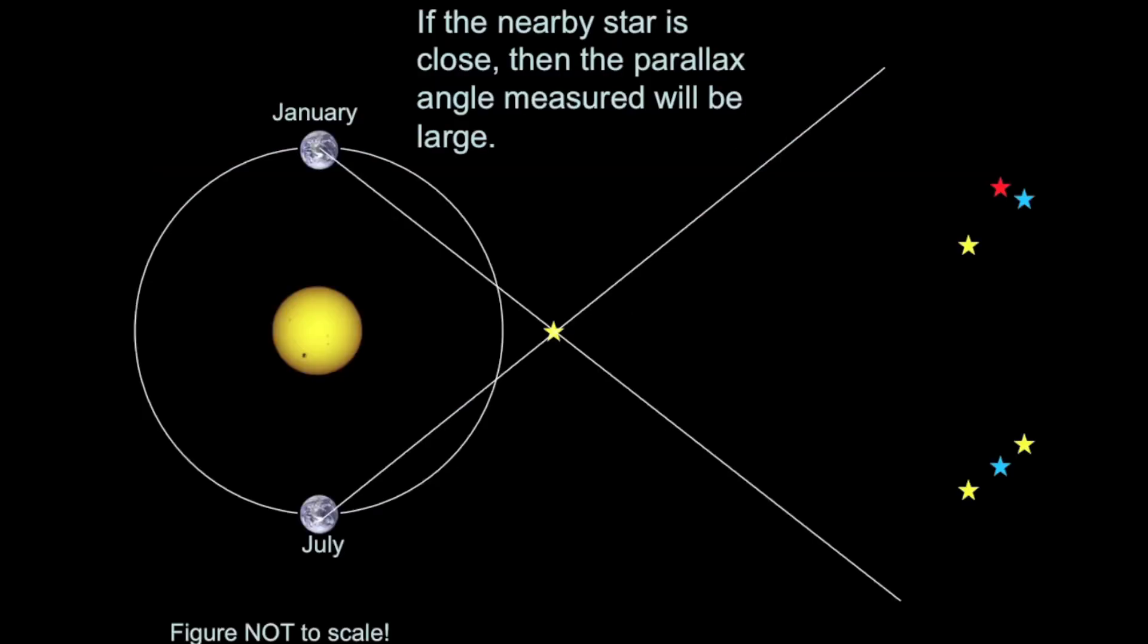If the nearby star is very close to us, then the parallax angle will be large. Because the closer the star is to us, the bigger that connecting angle will be, and therefore the bigger the parallax angle will be.